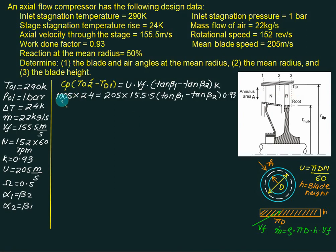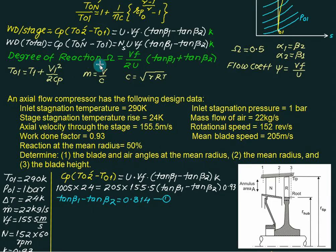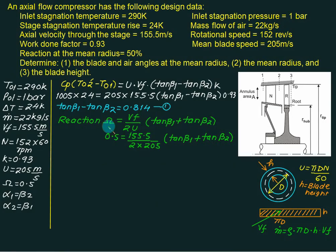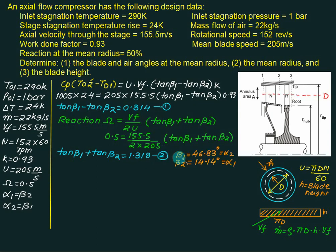For equation 1: Cp = 1005, temperature rise = 24, U = 205, Vf = 155, k = 0.93, giving tan β1 − tan β2 = 0.814. For equation 2 (degree of reaction = 0.5, Vf = 155, U = 205): tan β1 + tan β2 = 1.318. Solving equations 1 and 2, we get β1 = 46.83° = α2, and β2 = 14.14° = α1.